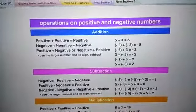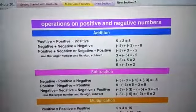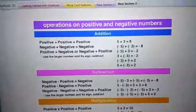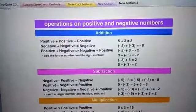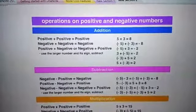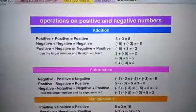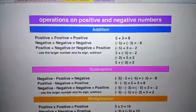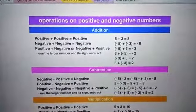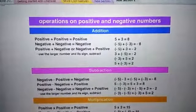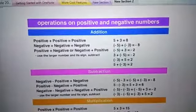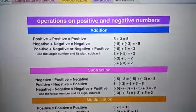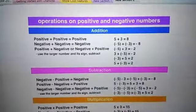Hello students. In an earlier video we have learnt about integers, natural numbers and whole numbers. Today we will learn about operations on positive and negative numbers. Fundamentally there are four types of operations on integers: first is addition, second is subtraction, third is multiplication, and fourth is division.